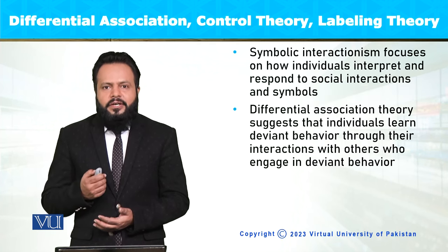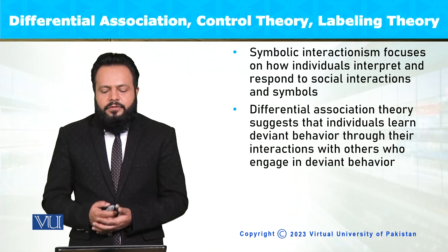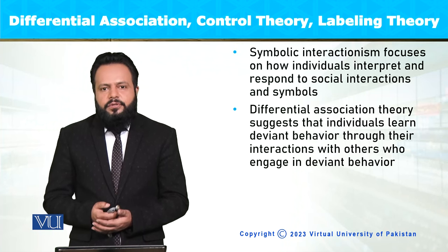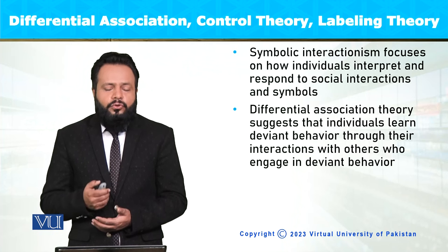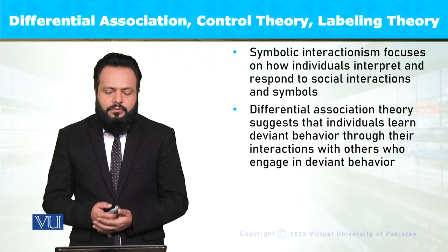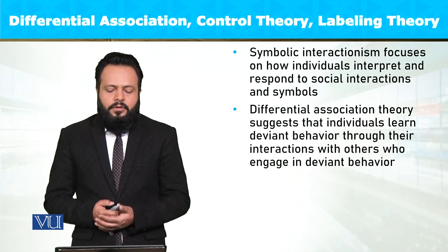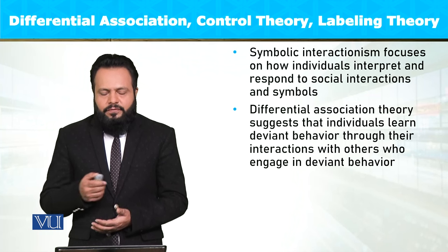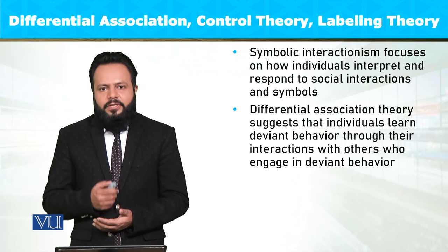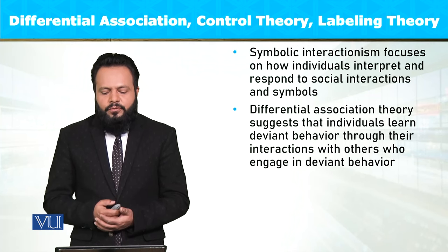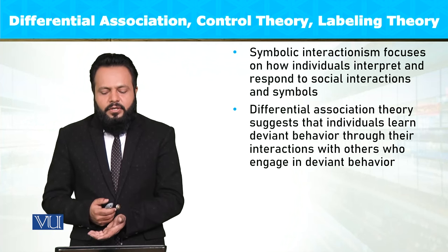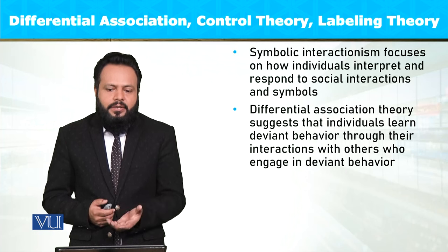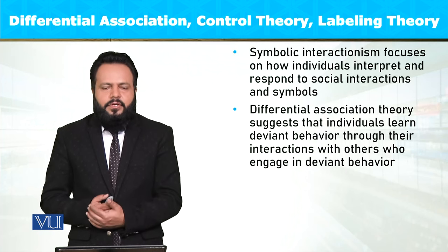Symbolic interactionism focuses on how individuals interpret and respond to social interactions and symbols. At the same time, differential association theory suggests that individuals learn deviant behavior through their interactions with others who engage them in deviant behavior.